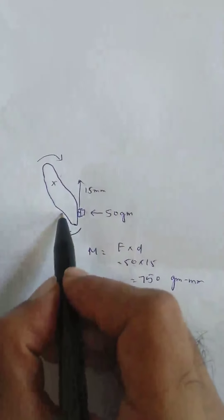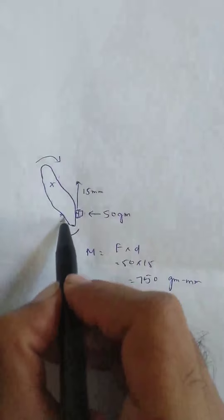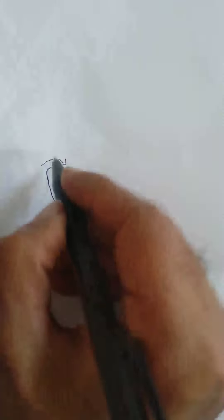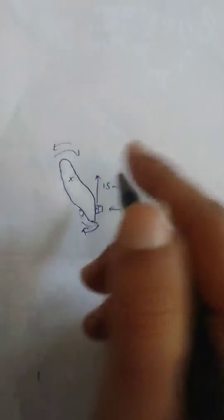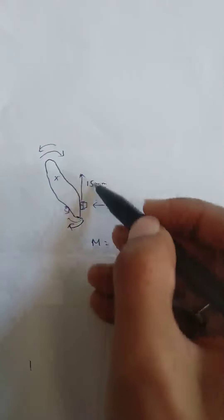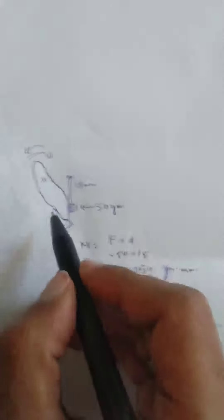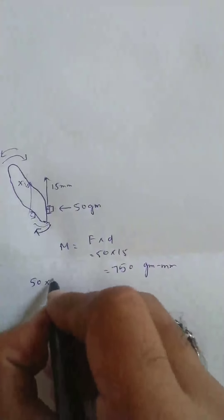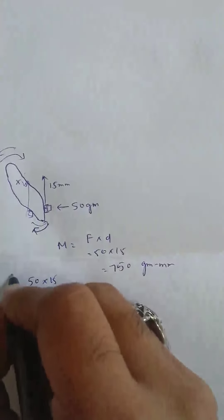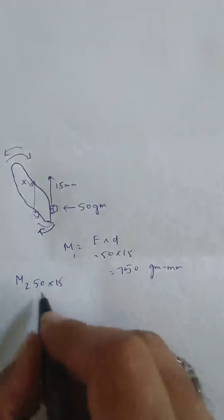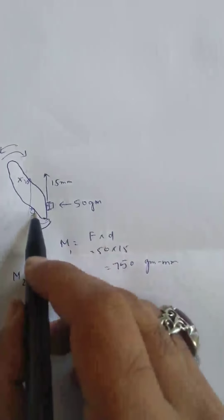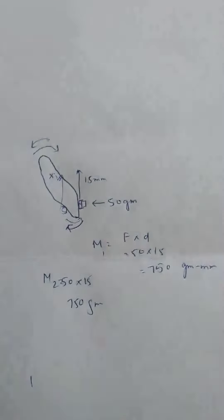The first method is that you put an appliance on the palatal side, either removable or fixed, which will produce the opposite moment. So if you produce the opposite moment, the moments will cancel. You put it at a distance of 15 mm with 50 grams of force — that also becomes 750 gram-mm moment. So M1 and M2 are both 750, the forces cancel, the moments cancel, and the tooth is in equilibrium.